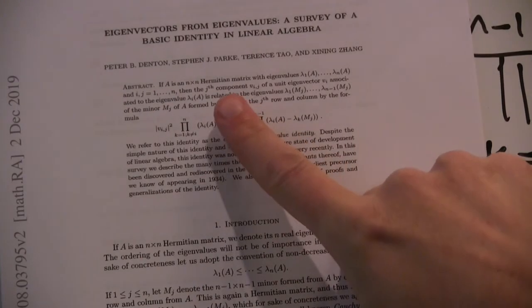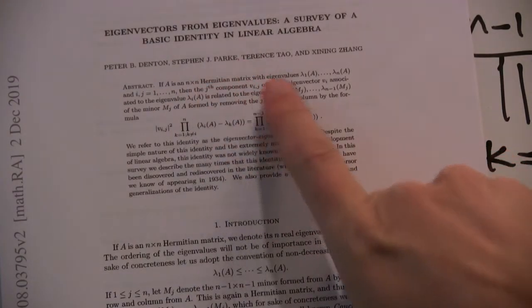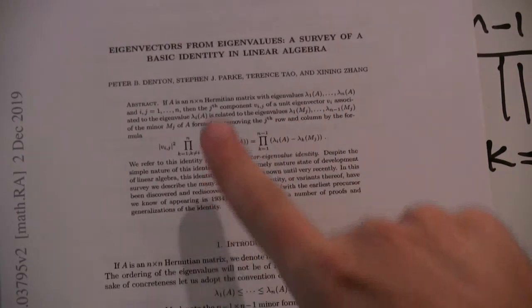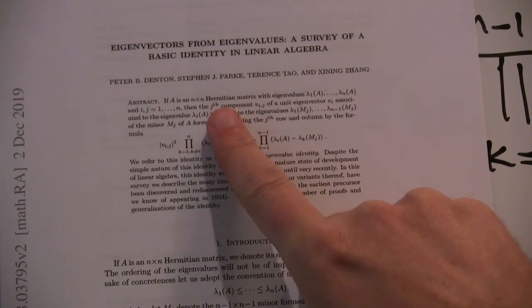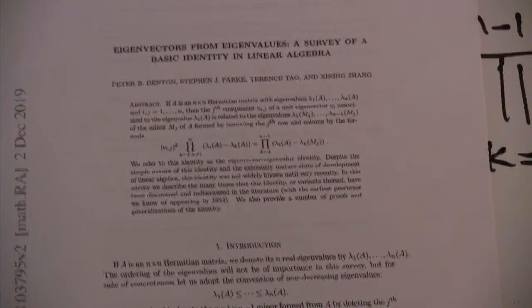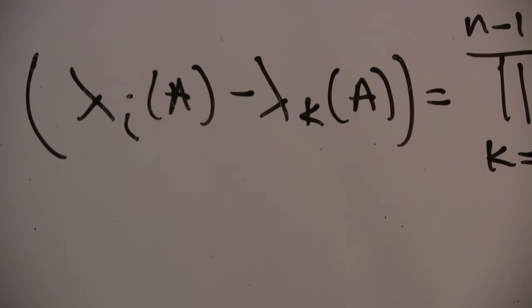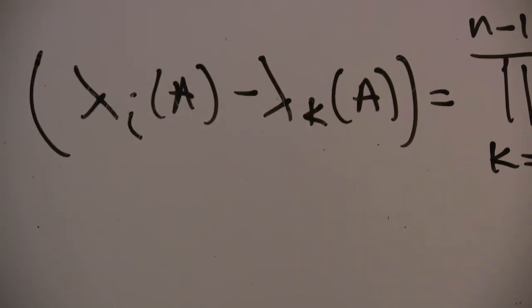So there's a new paper out by Terry Tao and some physicists that is about an interesting linear algebra identity for a class of matrices called Hermitian matrices. And what that identity says, and they call it eigenvectors from eigenvalues,